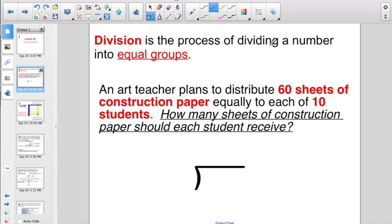Well, we're trying to divide the number 60 into equal groups. 60 is the number we are trying to divide into equal groups. How many equal groups are we dividing it into? We're trying to divide it between 10 students. So we end up with a problem like 60 divided by 10. Hopefully you know that 10 times 6 equals 60, so each student is going to receive 6 sheets of construction paper.